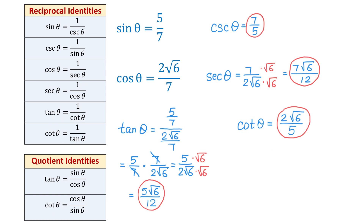In this problem, we were given the values of sine and cosine, and we found the values of the rest of the trigonometric functions using the reciprocal and the quotient identities. I hope you liked the video. Please subscribe, leave a comment, and thank you for watching.